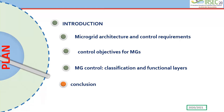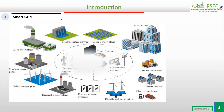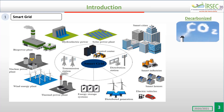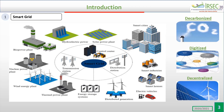Over the past decade, power supply systems have undergone a great transition from conventional energy to a more efficient model — we talk about the smart grid — which leads the energy system into a new three-dimensional paradigm: decarbonized, digitalized, and decentralized, with new distributed production units. This is the concept of microgrid.